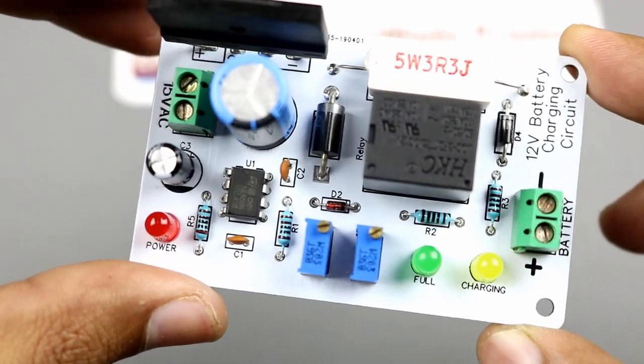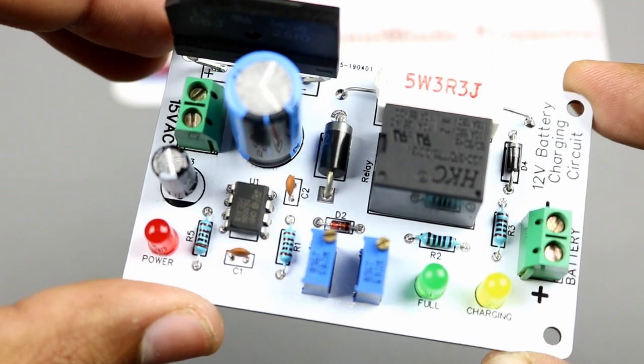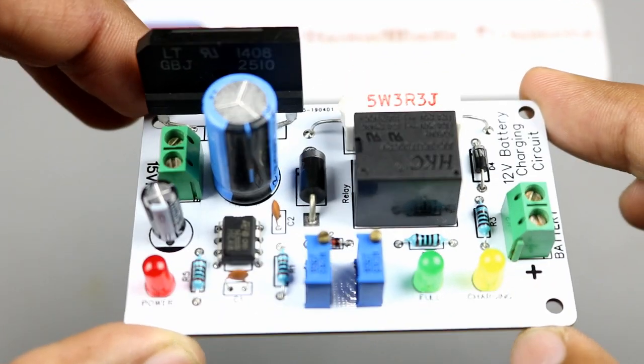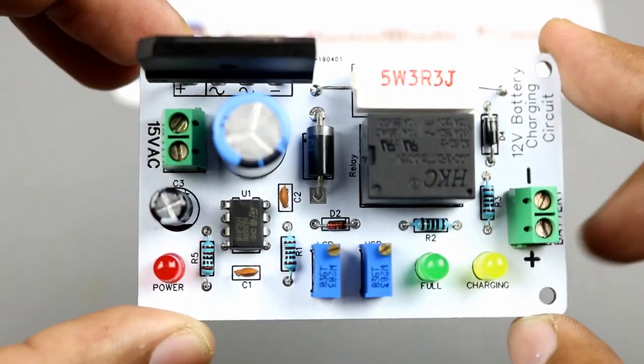So our component soldering is now complete. Now I am going to calibrate the circuit a little bit. After that we will be able to charge our 12V lead acid batteries by using this circuit.